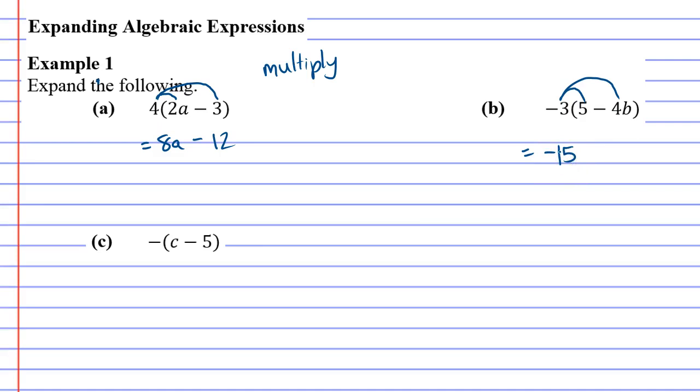And this is where it gets a little tricky because we're also going to go negative 3 times negative 4b. So we've got a double negative happening here. 3 times 4 is 12 and because of the double negative it becomes plus 12 and we've got a b there we need to put a b at the end of it.